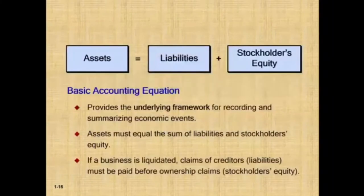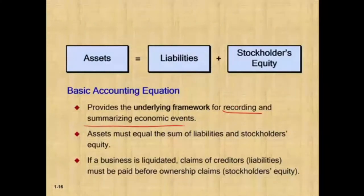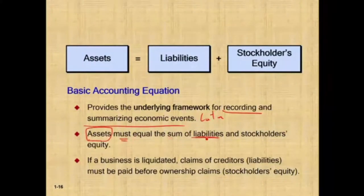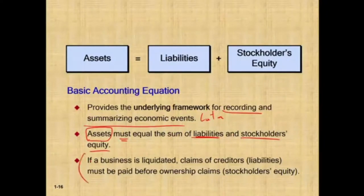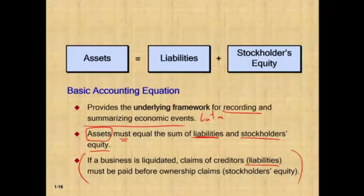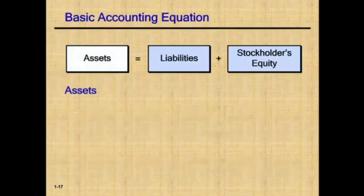The accounting equation underlies the framework for recording and summarizing economic events. Assets must equal liabilities plus stockholders' equity. If a business is liquidated, claims of creditors — liabilities — must be paid before ownership claims — stockholders' equity — are paid. The best way to explain the accounting equation is to break each component separately, explain it, then put the whole thing together and see how it all fits.